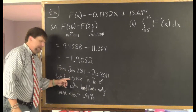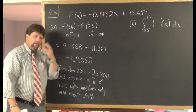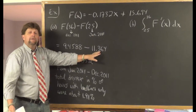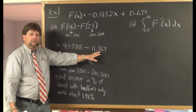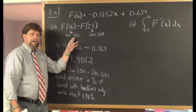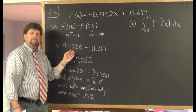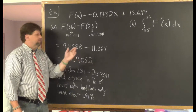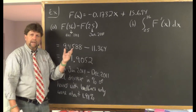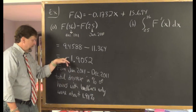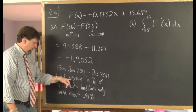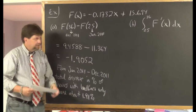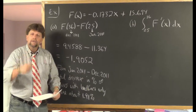Notice why I said decrease — it's a negative number. In January 2011, a little over 11% of households had landlines only. In December 2011, it was 9.45%. So you went from 11% down to 9.5% — that's a decrease. That's why there's a negative sign, and that's why I used the word decrease.